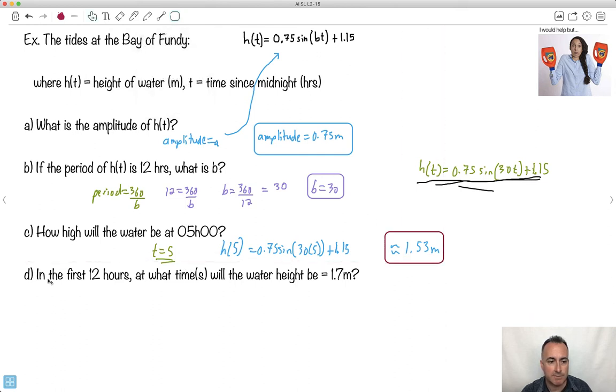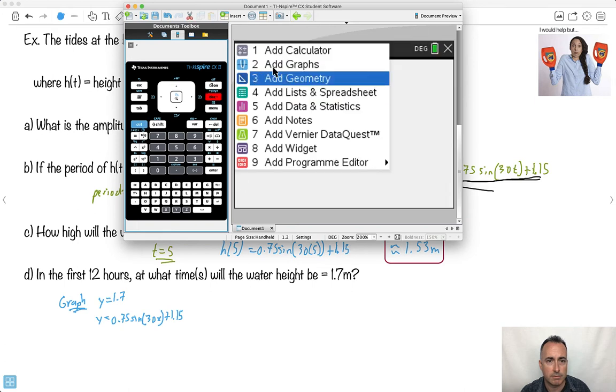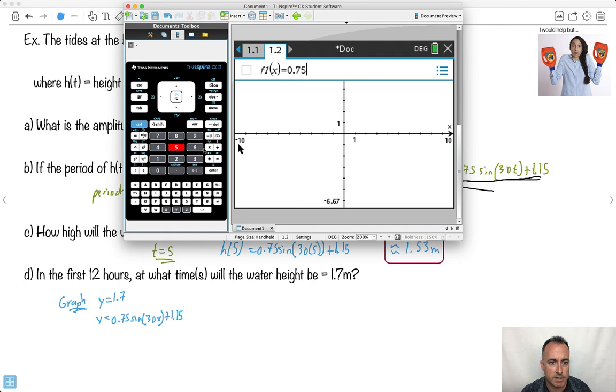Now comes the interesting part. In the first 12 hours, at what times will it be 1.7? This is a little bit more complicated, because you're trying to set your height equal to 1.7, and it sounds complicated. I think the best way to do this is to actually graph it. We're going to graph y equals 1.7, because that's what it means to be equal, right? We want 1.7 to be the same as all this. So I'm also going to graph y equals 0.75 times sine of 30t plus 1.15.